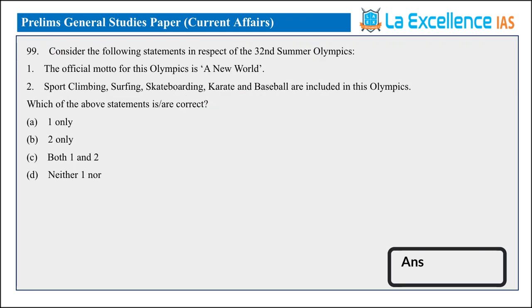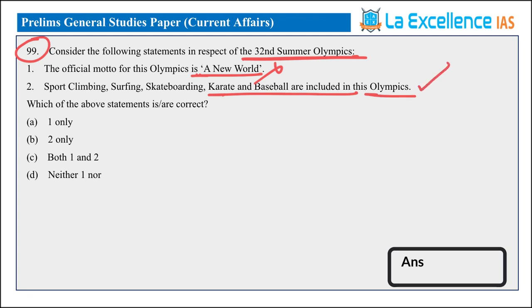Next is the 99th question of Set A — consider the following regarding the 32nd Summer Olympics. Statement 1: The official motto is 'United by Emotion,' not 'A New World' — so the first statement is incorrect. Statement 2: Sports climbing, surfing, karate, and baseball are included in this Olympics — yes, this is right. So the answer is B, statement 2 only.